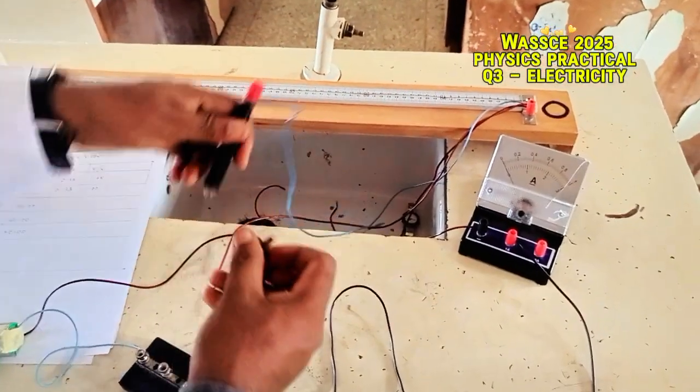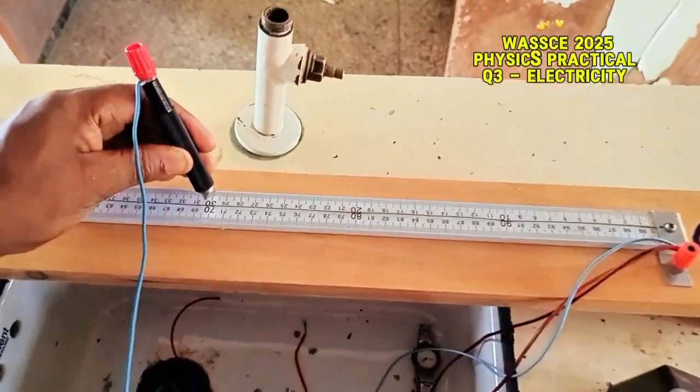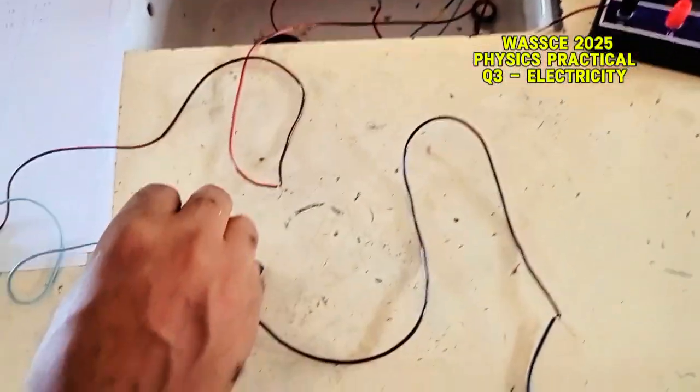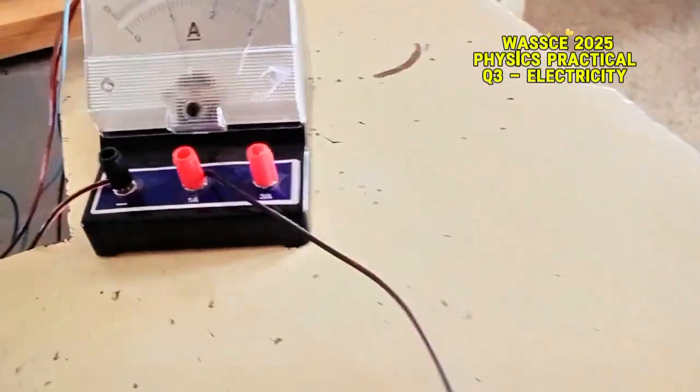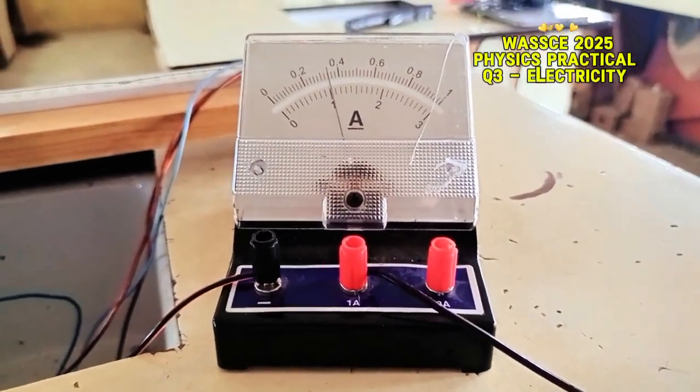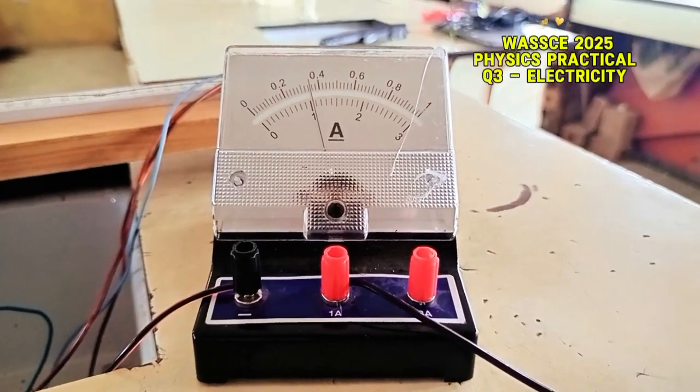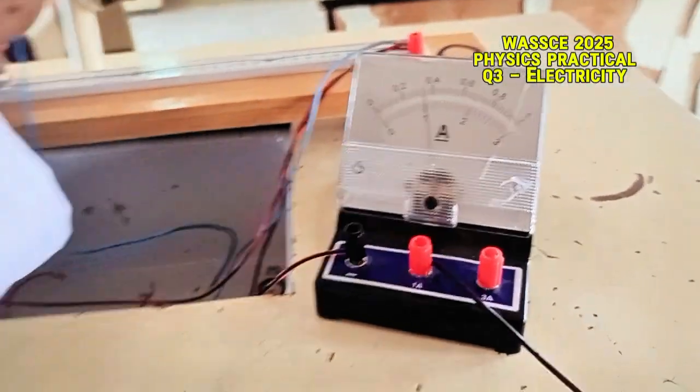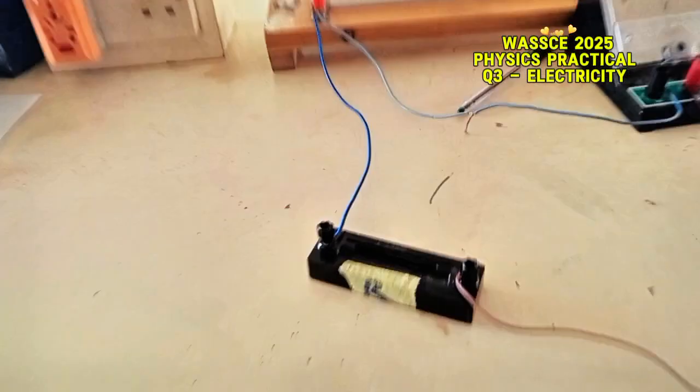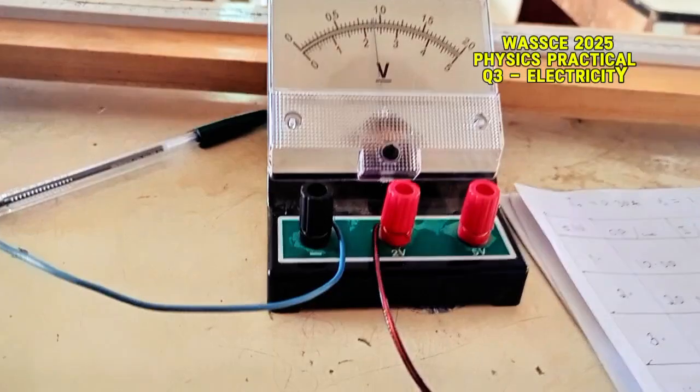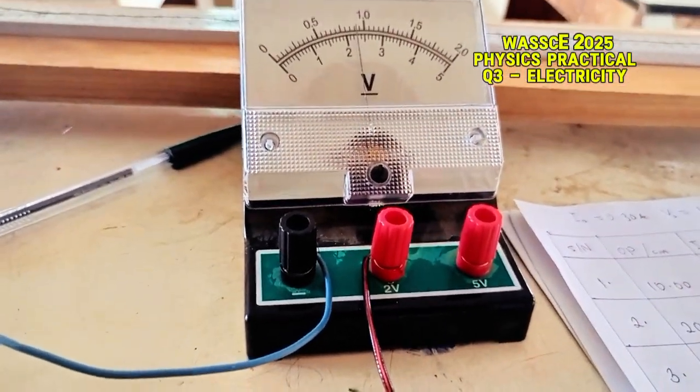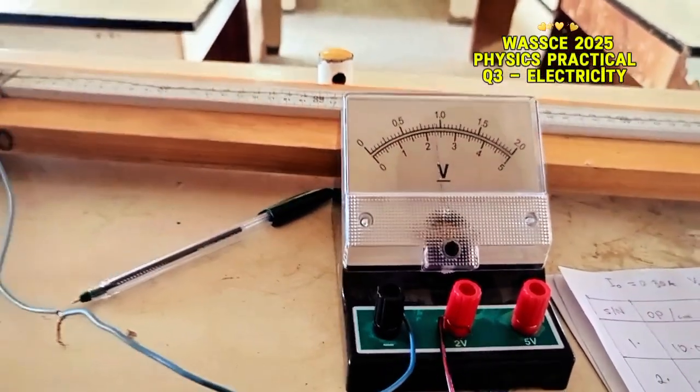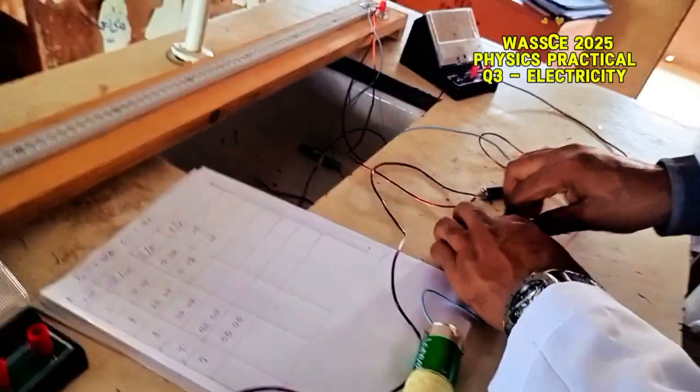And this one, we move this one to 30. Let's see down there. Then put in our key and then take our reading. This is 0.34. And the other one is, so we take two from 0.90. This one is 0.34.